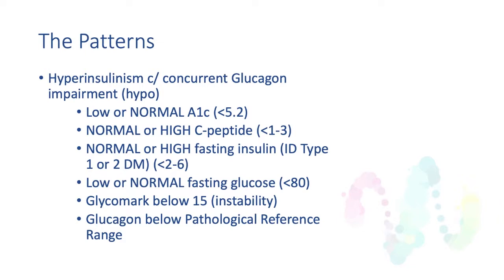Pattern two: hyperinsulinism with concurrent glucagon impairment. You have a low or normal A1C, normal or high C-peptides — the pancreas is pumping out a lot of insulin — normal or high fasting insulin, fasting glucose within normal laboratory limits, Glycomark below 15 indicating instability with glucose excursions, and glucagon below the pathological reference range. Too much insulin, not enough glucagon — too much blood sugar lowering hormone, not enough blood sugar raising hormone, coming from the same organ.